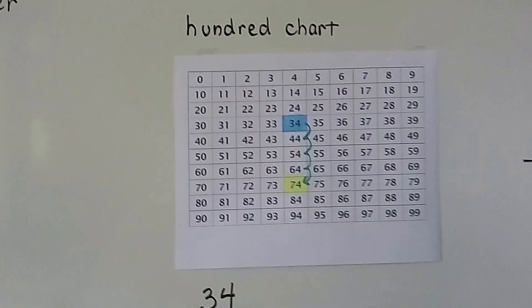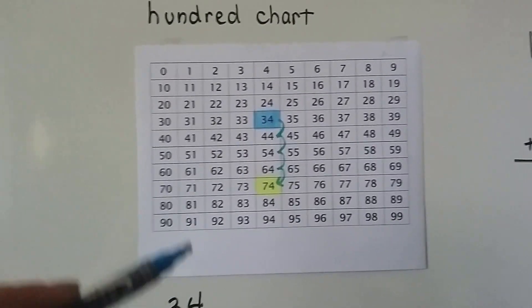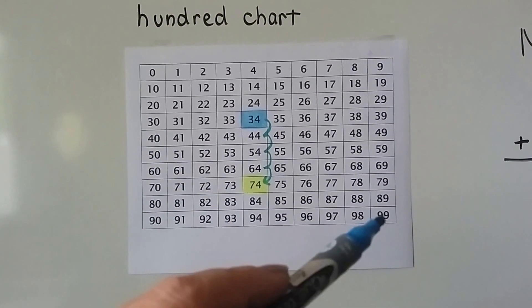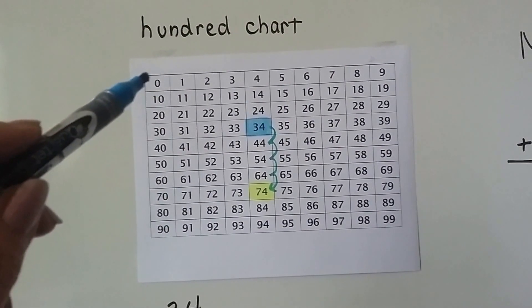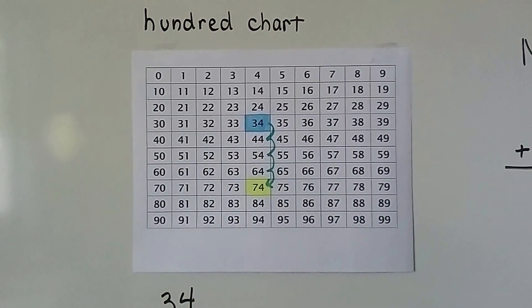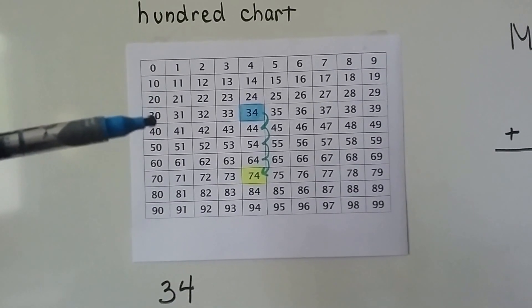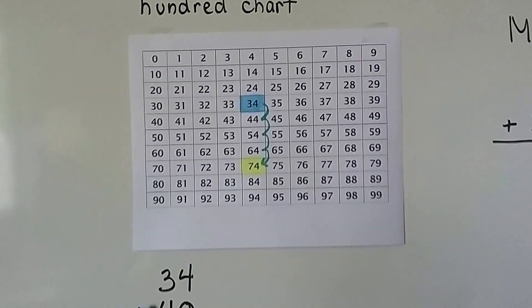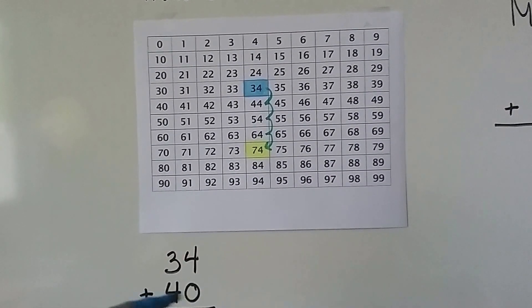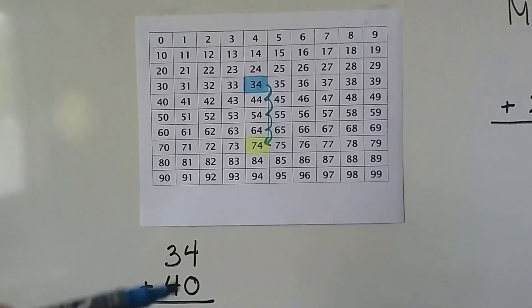We can use a hundred chart. Sometimes they start with a 1 here and end with 100. This particular one starts with 0 and ends with 99. But we can still use it because each row is 10. So if we want to just add some tens, like 40 is 4 tens,